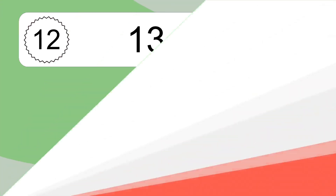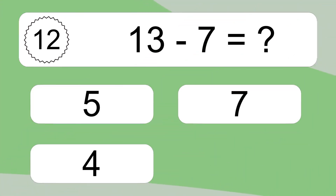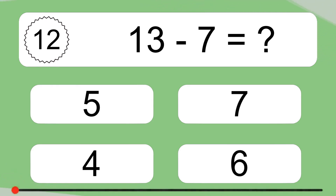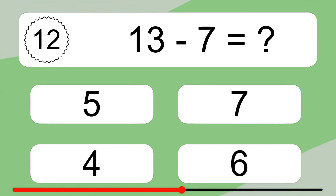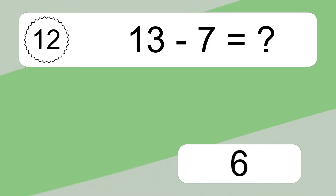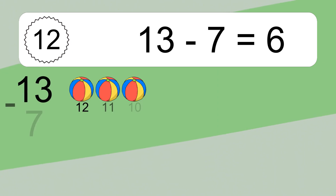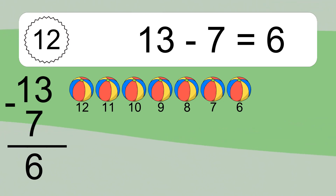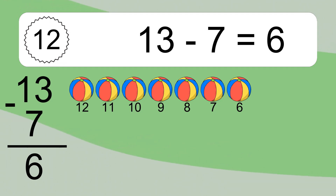13 minus 7 equals what? 13 minus 7 equals 6. Let's count it: 12, 11, 10, 9, 8, 7, 6.